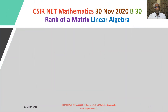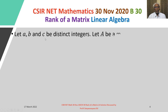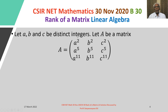The problem is: let A, B and C be distinct integers. Let A be a 3×3 matrix whose first row is (A², B², C²), second row is (A⁵, B⁵, C⁵), and the third row is (A¹¹, B¹¹, C¹¹).